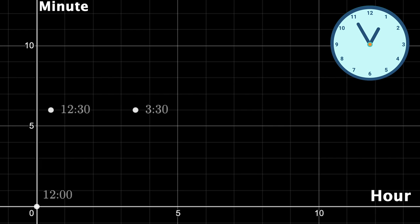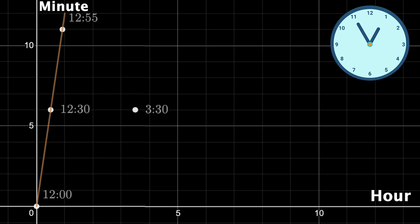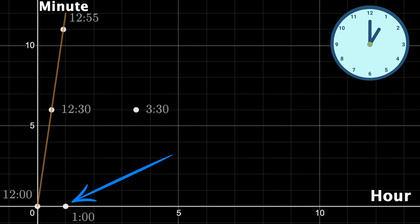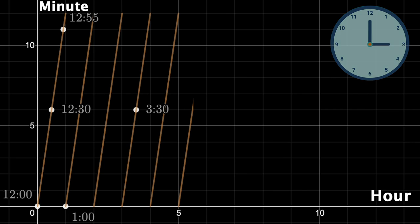12:55 would be 0.917 comma 11. And since the clock moves at a constant speed, the first hour would be represented with this line segment here. That is 12 to 1. Then 1 o'clock starts back down here at 1 comma 0. 1 to 2 would then be this line segment. 2 to 3 would be this one, and this would continue for all 12 hours.